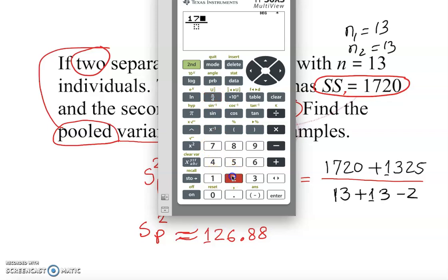1720 plus 1325 over degree of freedom. Well, you can type this whole thing. Or degree of freedom, you know, 26 minus 2 is 24, you can put down. Or, easy, 13 plus 13 minus 2, enter.